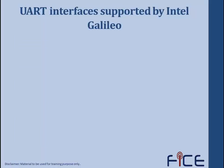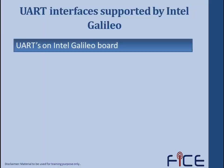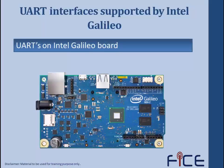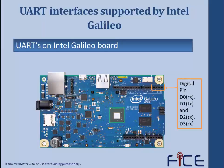Intel Galileo has inbuilt UARTs present on the digital pin side. Digital pins D0 and D1 act as one UART, and D2 and D3 act as another UART on the Intel Galileo. D0 acts as a receiver, D2 acts as a transmitter, and D3 acts as a receiver. There is also one more UART on the USB client side. When the digital pin UARTs are not in use and output to the serial monitor is needed, the USB client UART is used.